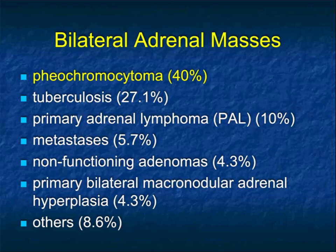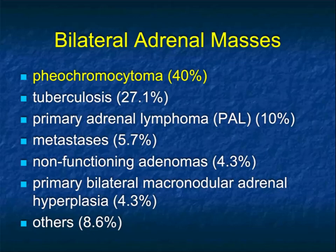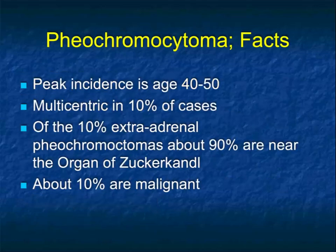When you look at bilateral adrenal lesions, tumors and infection can be bilateral, and adenomas can be bilateral. Percentage-wise, the entity most commonly bilateral is pheochromocytomas at about 40% of bilateral cases. In total, about 10% of pheos are bilateral, so they're bilateral in 40% of the cases of bilateral adrenal lesions.